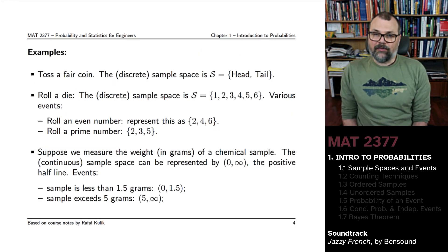Now let's look at some examples of sample spaces. Let's say your experiment is to toss a fair coin, a regular coin. The sample space contains two possible outcomes: head or tail.